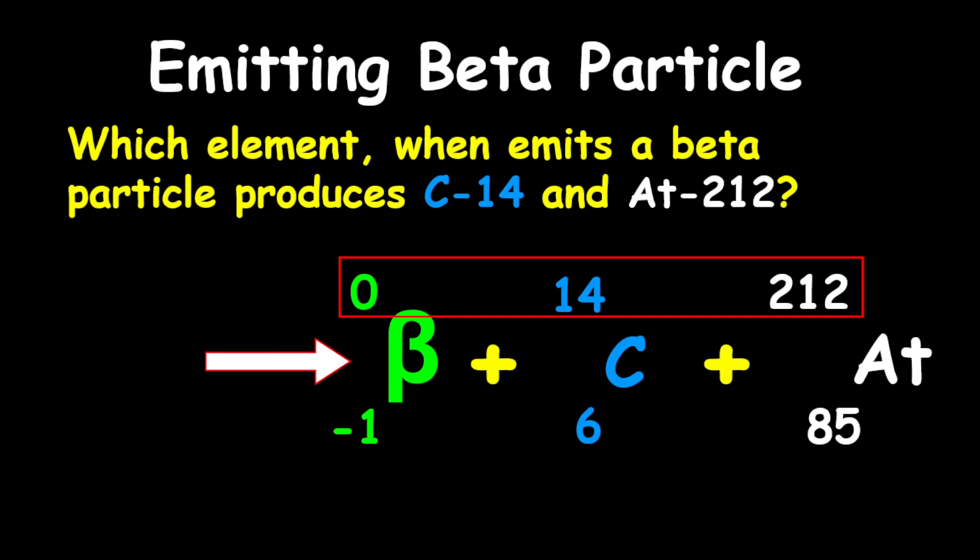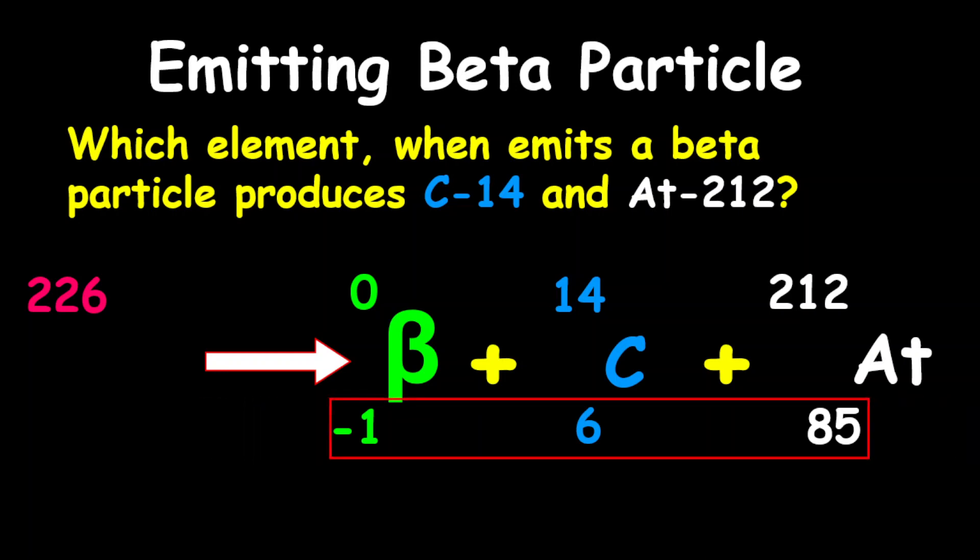We're going to do the similar thing with the proton numbers, and so therefore, negative 1 plus 6 plus 85 gives us 90. If you look through your periodic table, you realize that 90 represents thorium. Therefore, the answer is thorium-226.